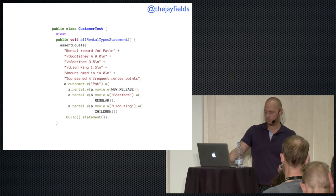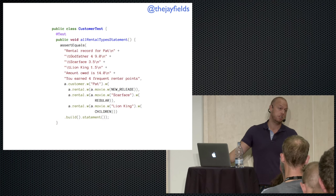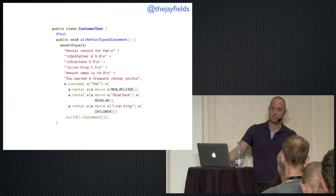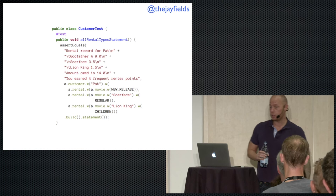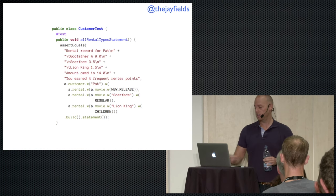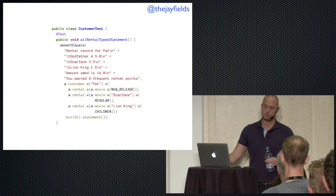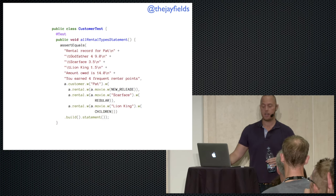If the failure is in a solitary test, maybe I have an actual problem in my domain. If I'm testing code branches in my sociable tests, I have a missing solitary test — go write it. The tests focus on a single responsibility, and the specific type of test tells me where to go based on the feedback. Separate them to make it easy to know where to look.